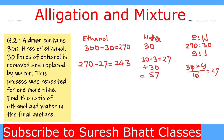In the final mixture we have 243 liters of ethanol and 57 liters of water. The ratio of ethanol to water is 243:57. Both are divisible by 3, giving a final ratio of 81:19.